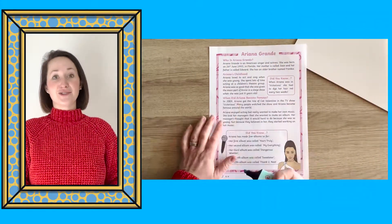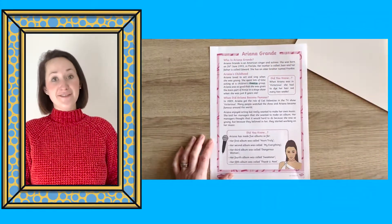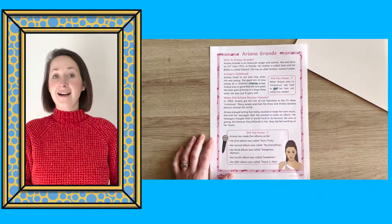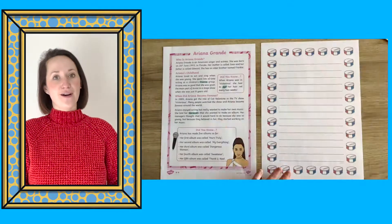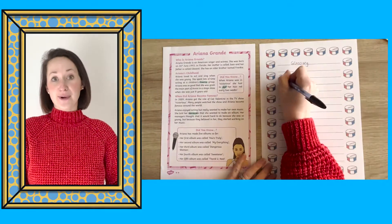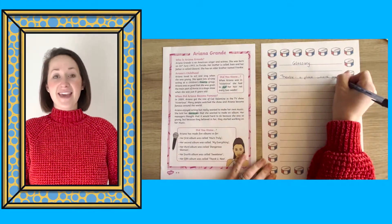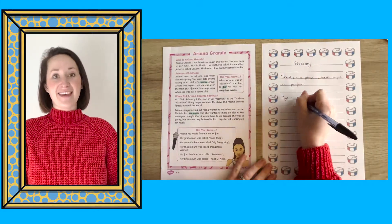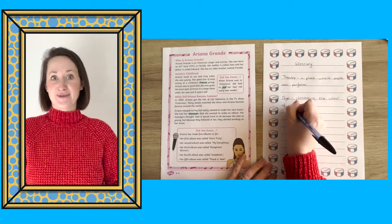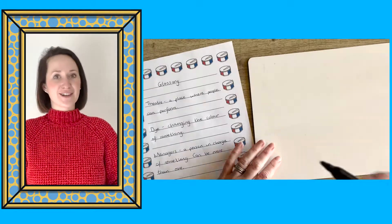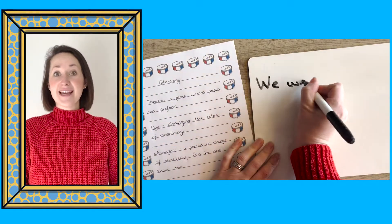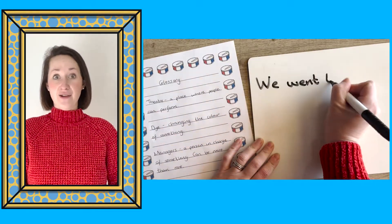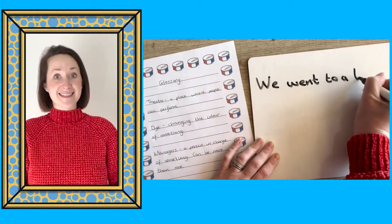First, you could ask children to read the FactFile and highlight any words that they're unsure of, or new words. They could then create their own glossary. From this glossary, they could try and use the words to create their own sentences.